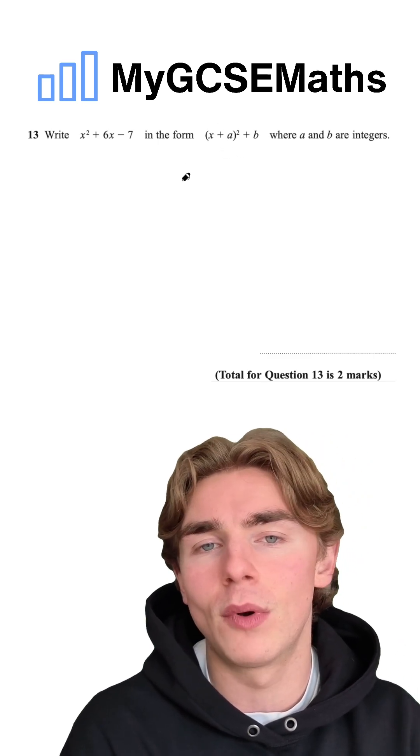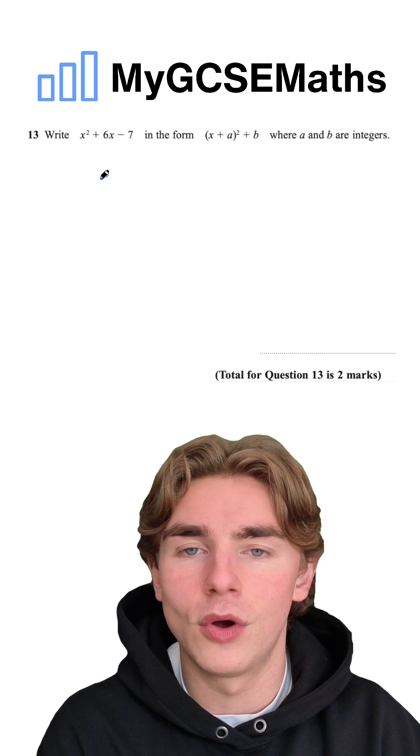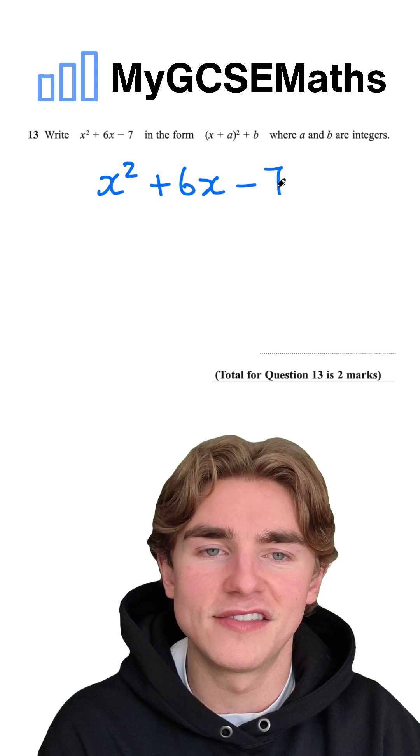How do we complete the square? Well, this is a process to be memorized, to be honest. So we're going to start off by rewriting our quadratic. We're going to have x squared plus 6x minus 7.